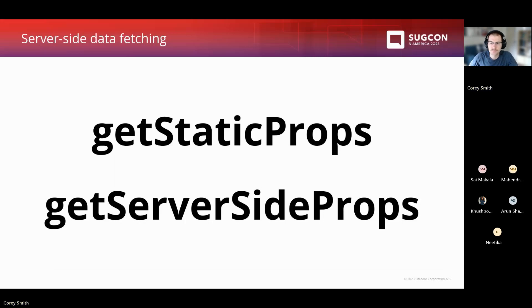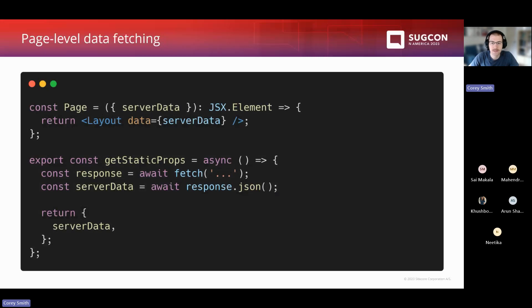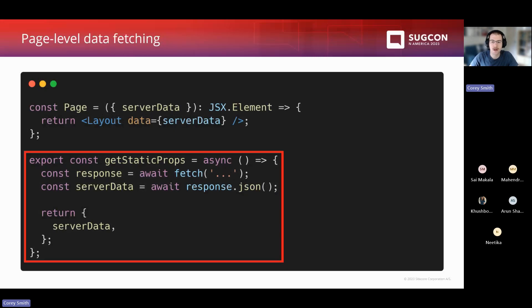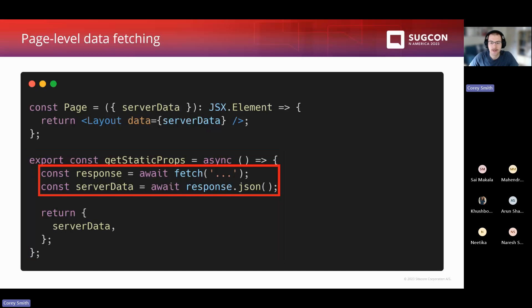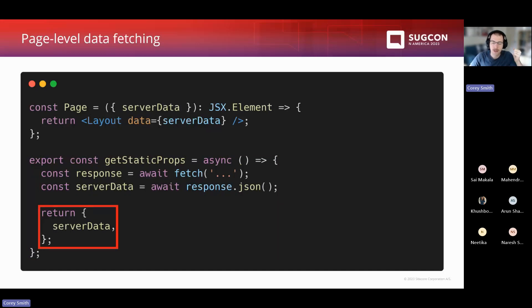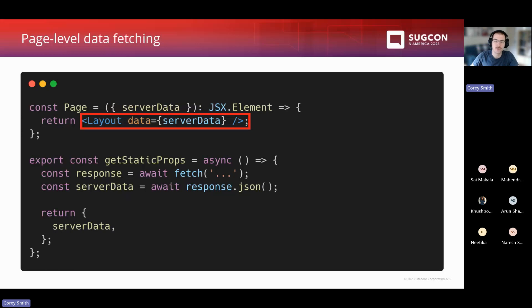In a standard Next.js application, on your page at the page level, you can export a function called getStaticProps or getServerSideProps right alongside your page. Inside this function you can make API calls, do computationally intensive tasks — whatever you want to execute during server-side rendering. After that, you return your data, and Next.js will automatically pass whatever the result of this function is to your page as a prop. Your page can then pass that down to its child components.